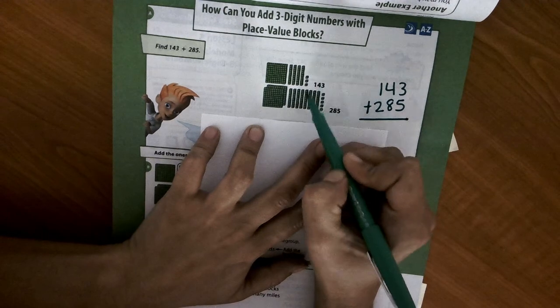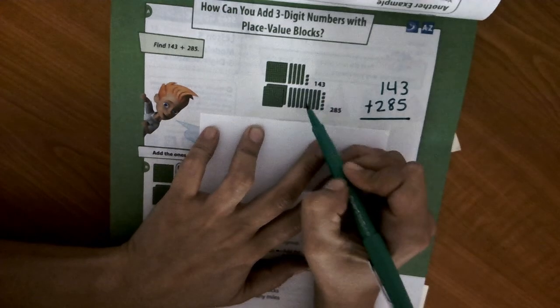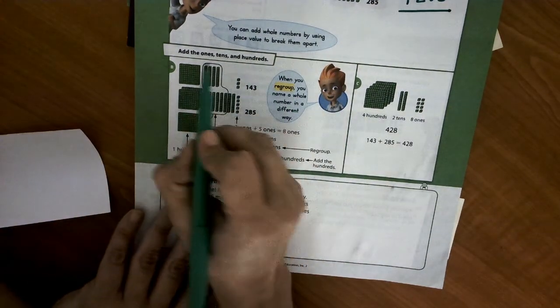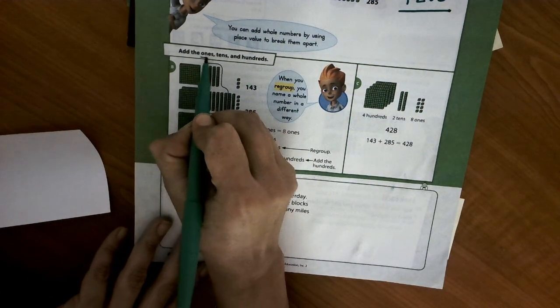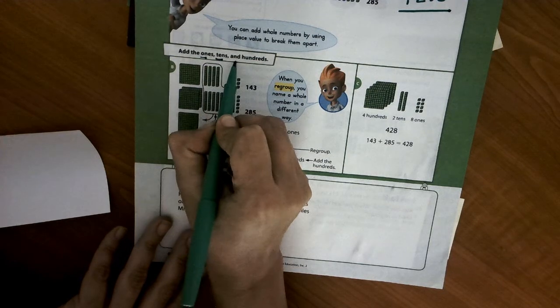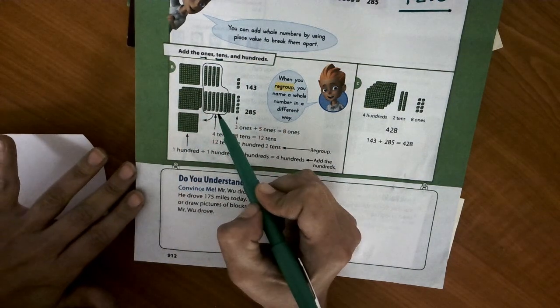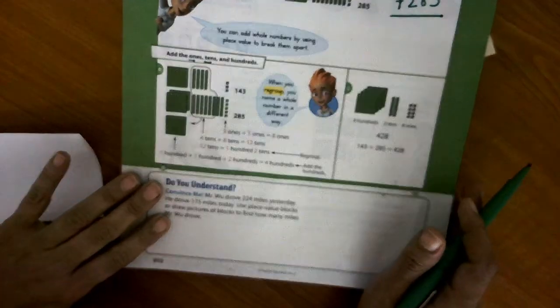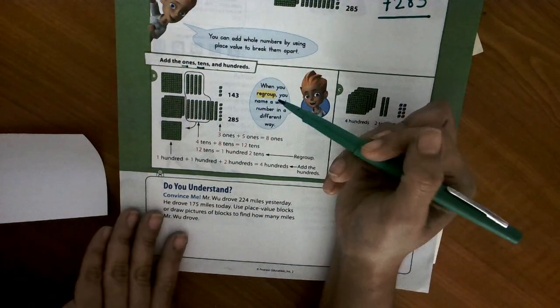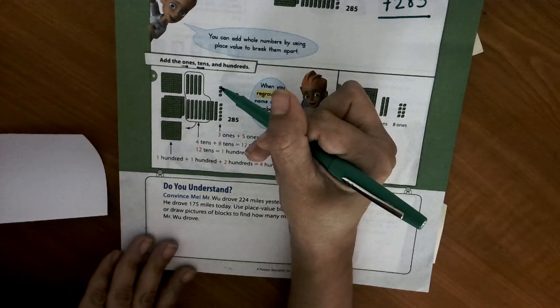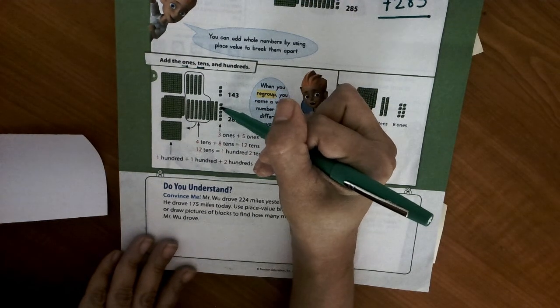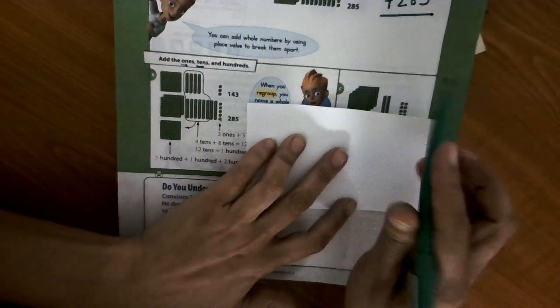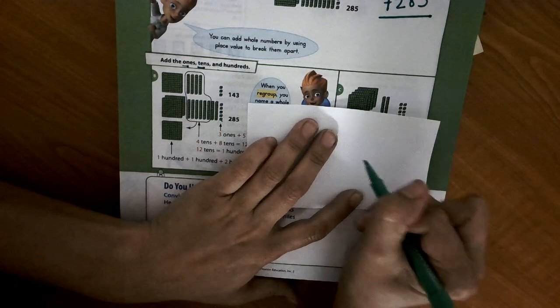We can use the place value blocks to help us count. Here it tells us our steps. First, add your ones, then you add your tens, and then your hundreds. When you add your ones first, you need to decide if you have to regroup or not. When we count, we say 1, 2, 3, 4, 5, 6, 7, 8. There are 8 ones. Do we need to regroup? No.